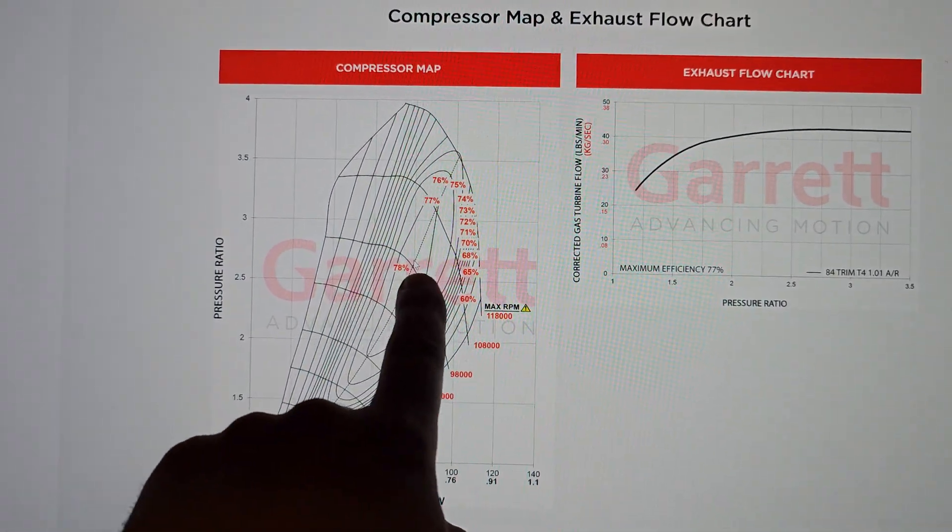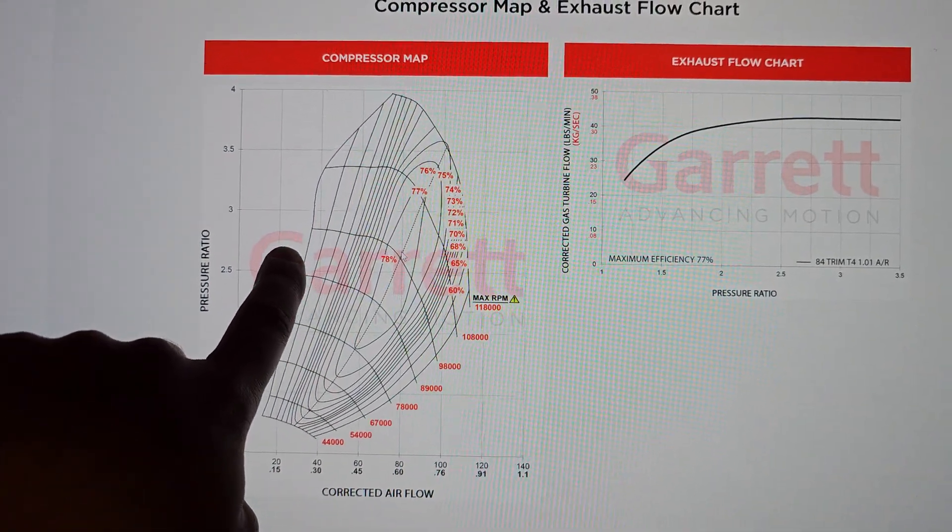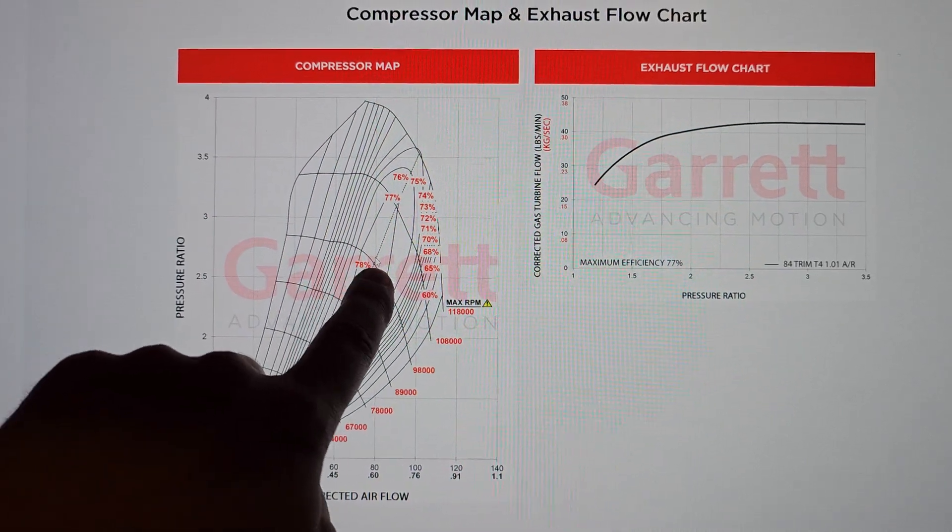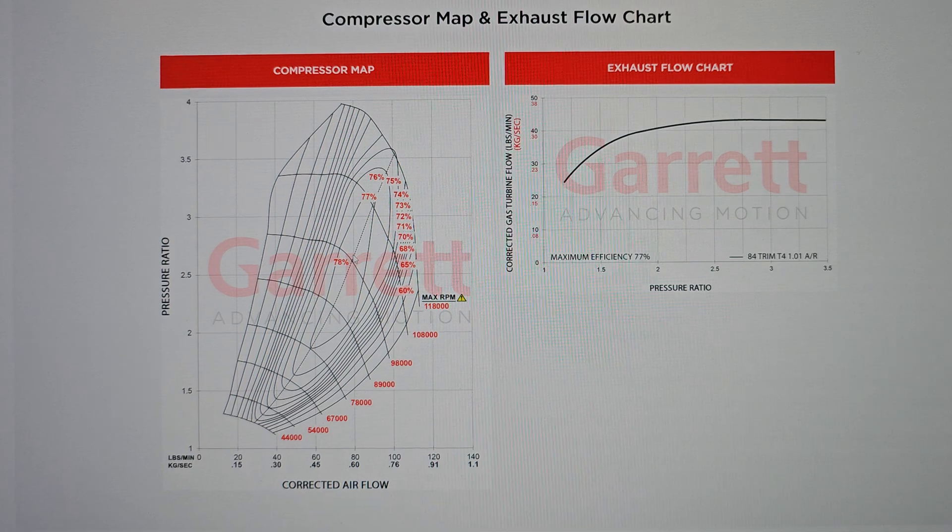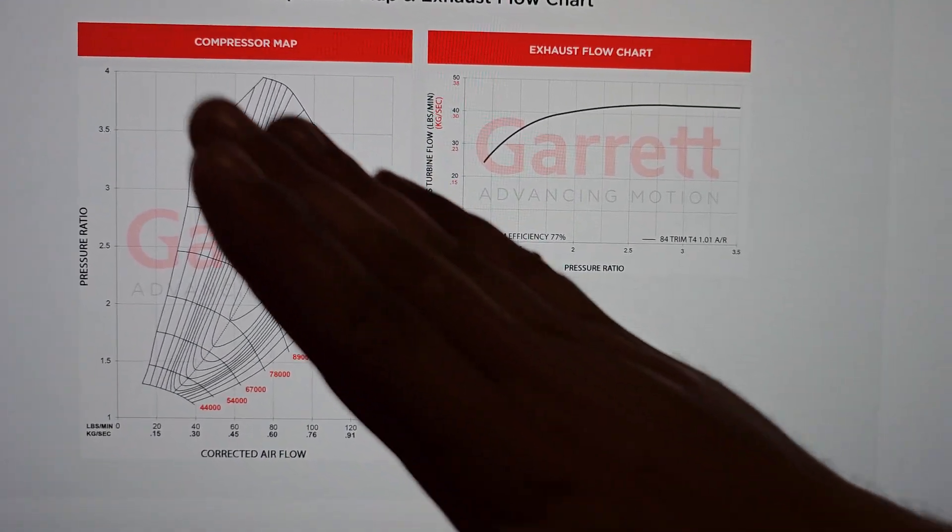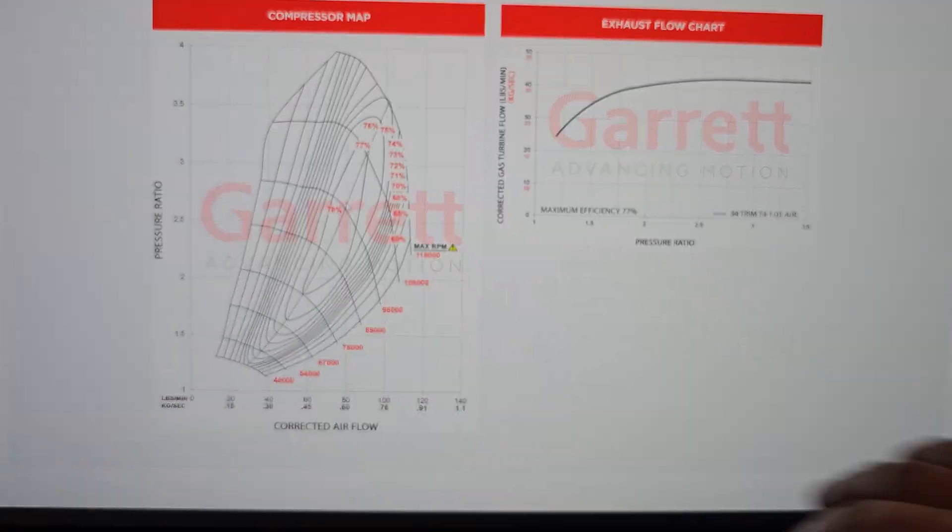And the closer these lines are to each other, so these lines are far, these lines are close. The closer these are to each other, that dictates the slope, the steepness of that side of the mountain.